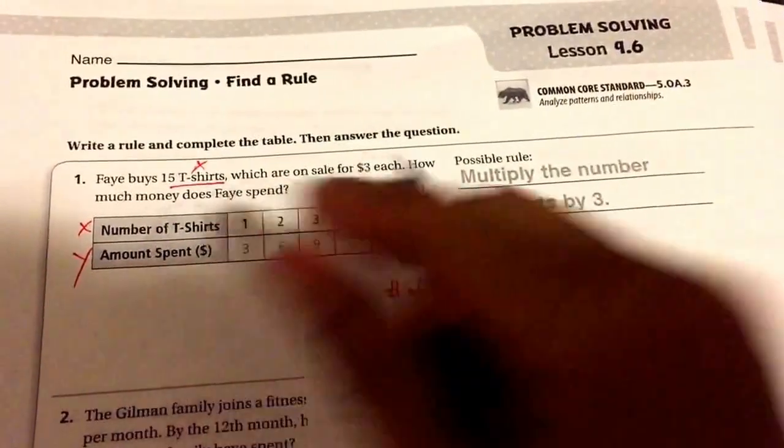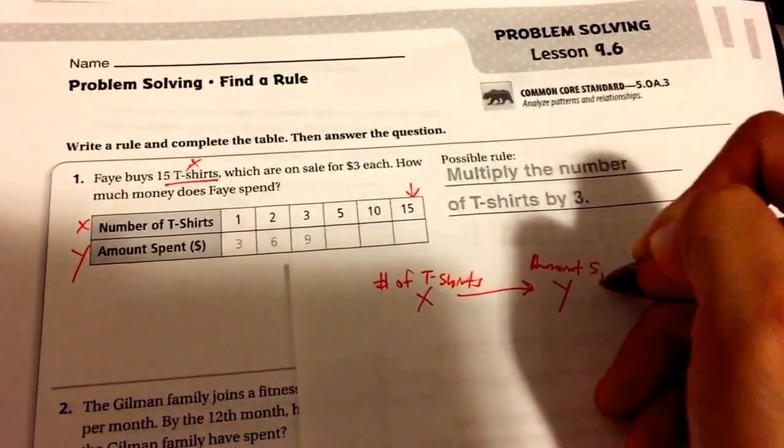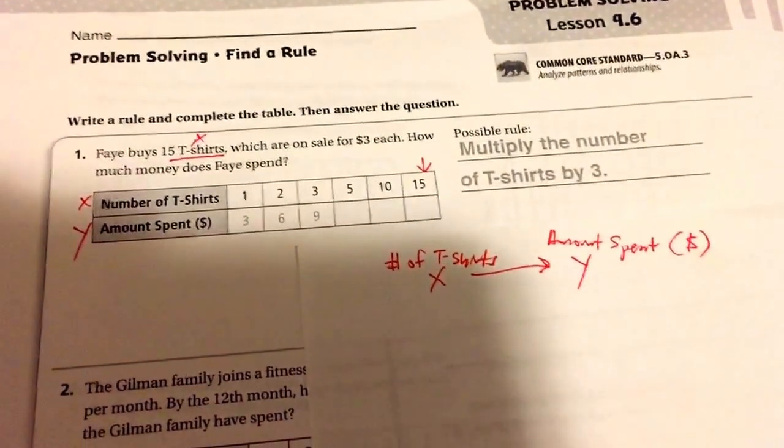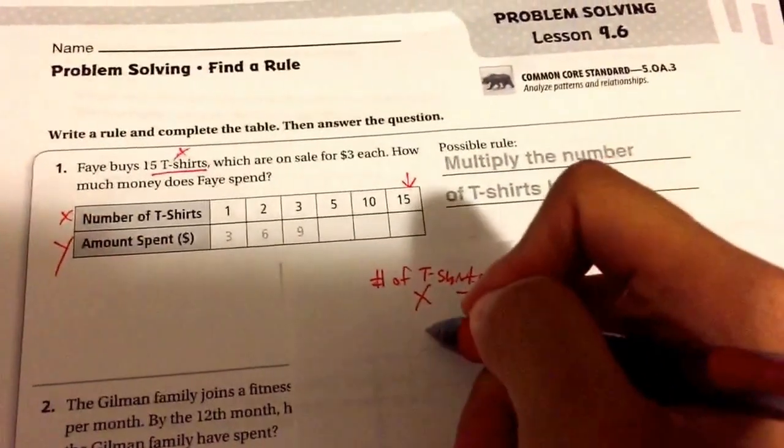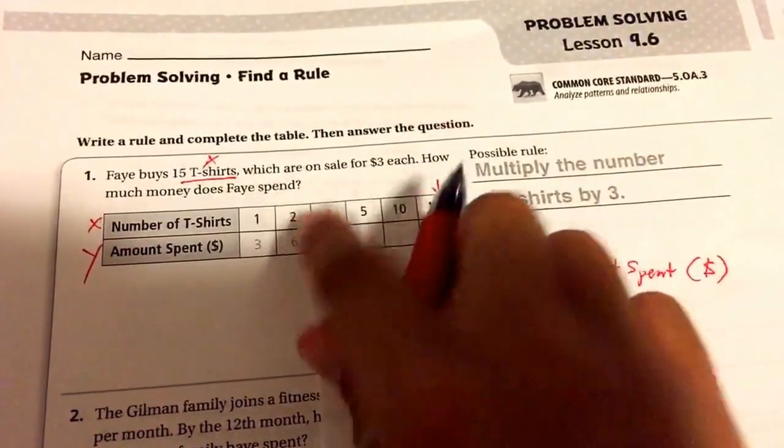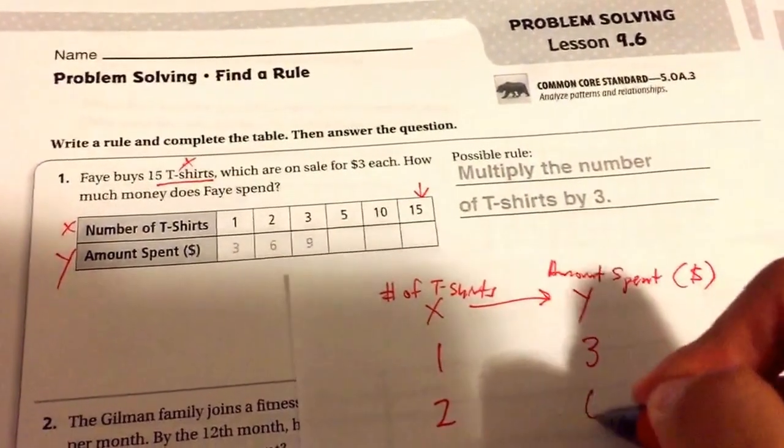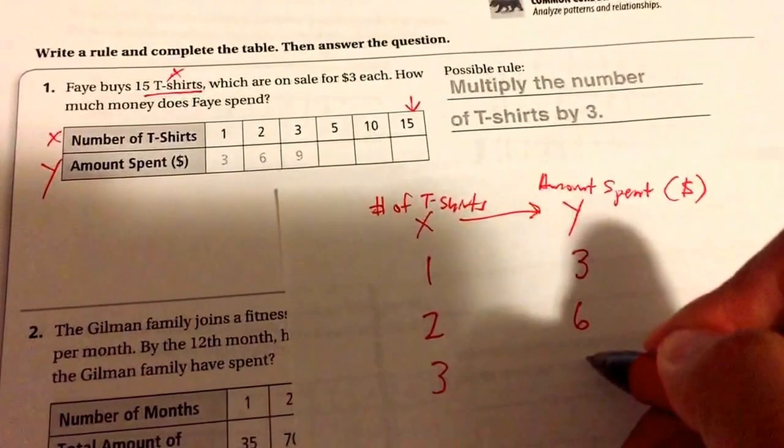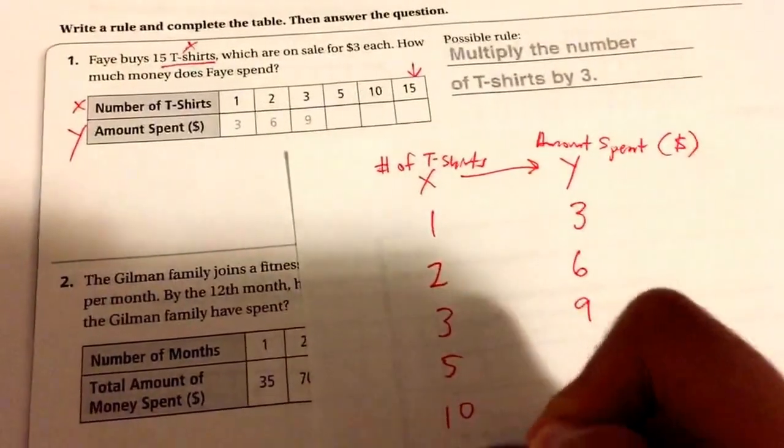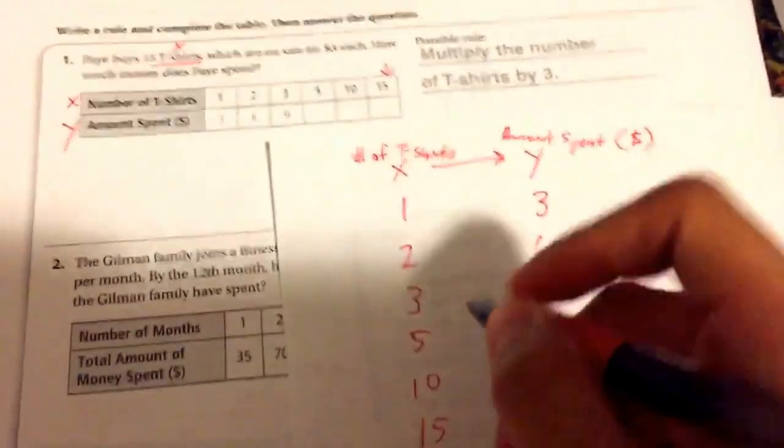And our Y is the amount spent, and this is in US dollars. So if you buy one t-shirt you spend three dollars, if you buy two t-shirts you spend six dollars, three t-shirts nine dollars. So how much would it be for five, ten, and eventually 15, because 15 is what they're actually asking?